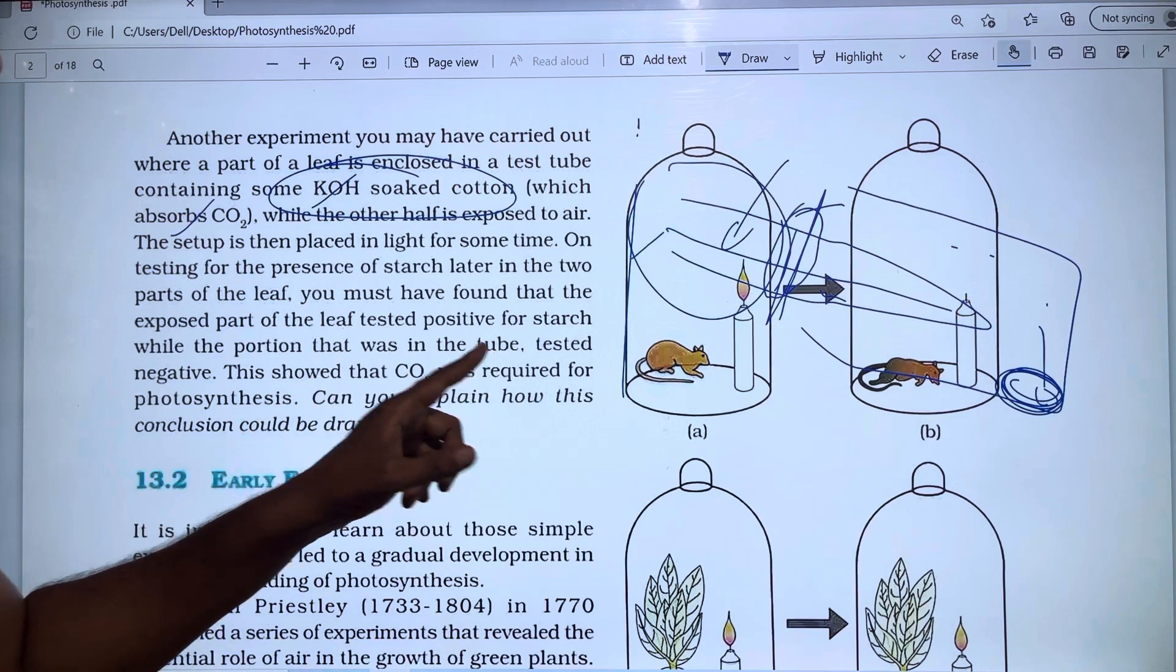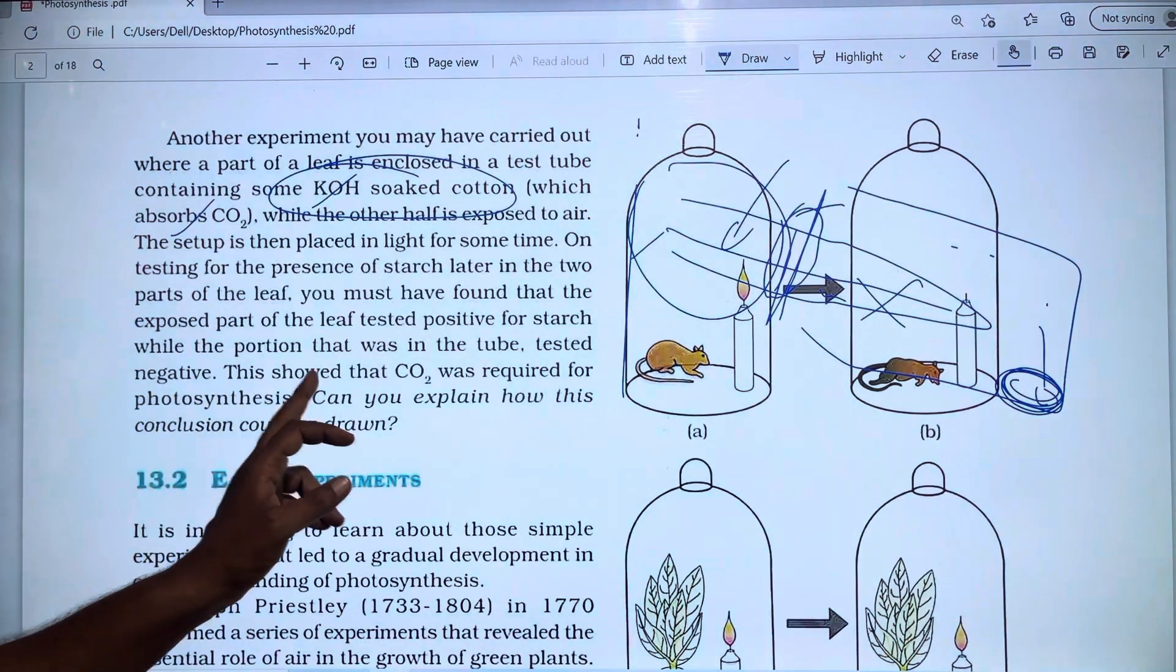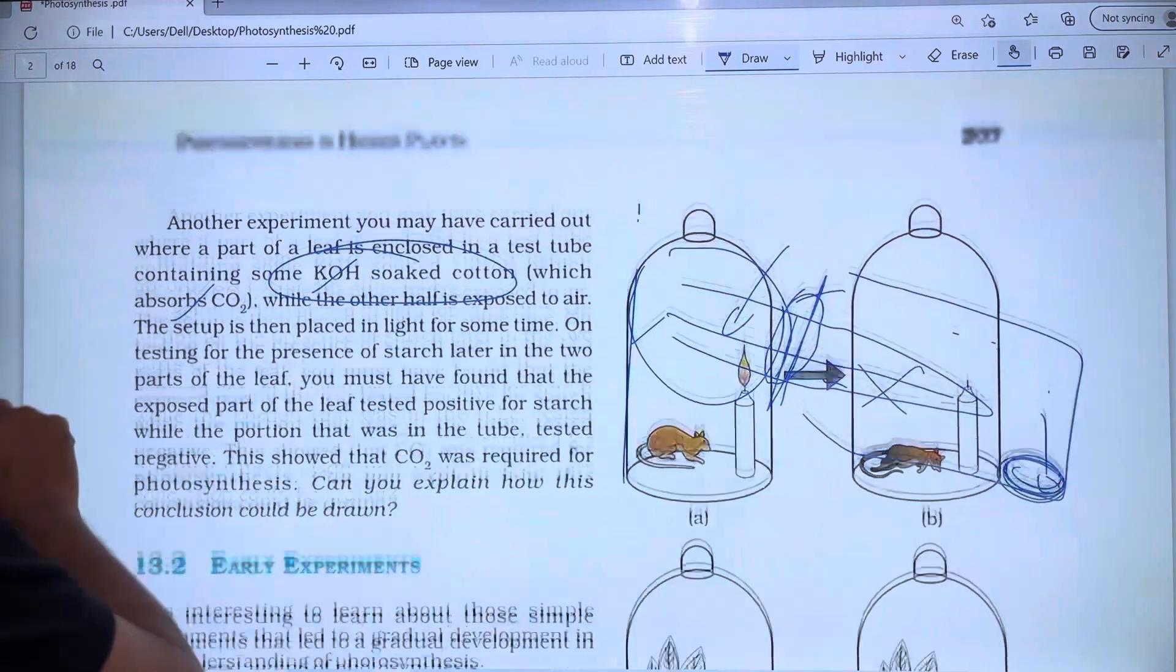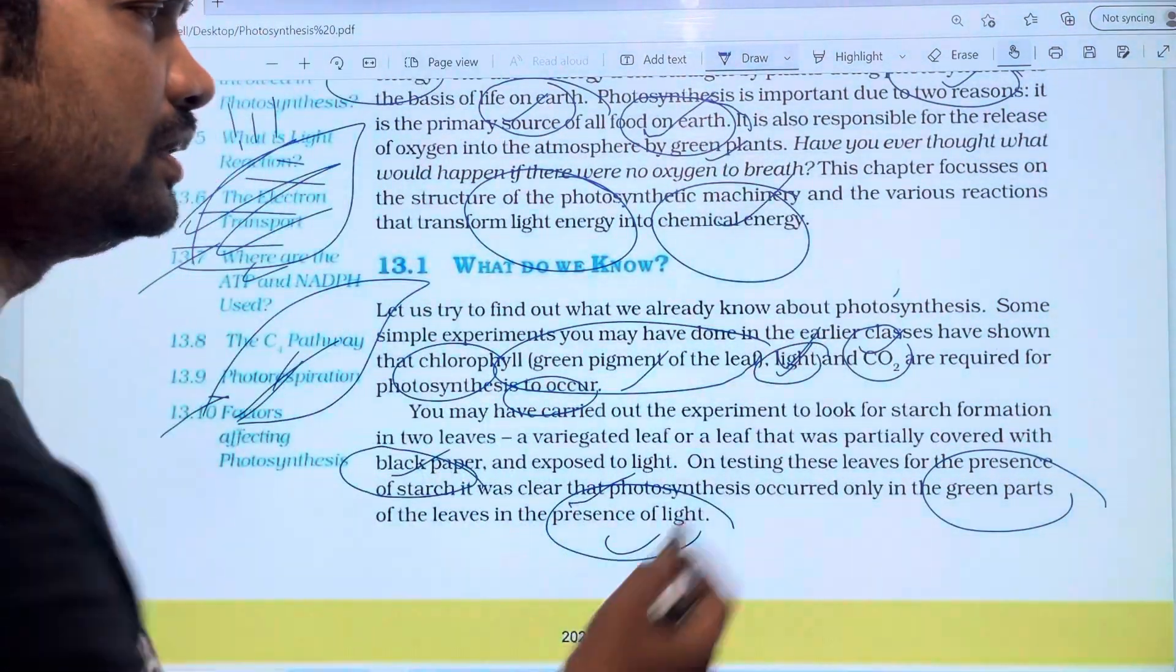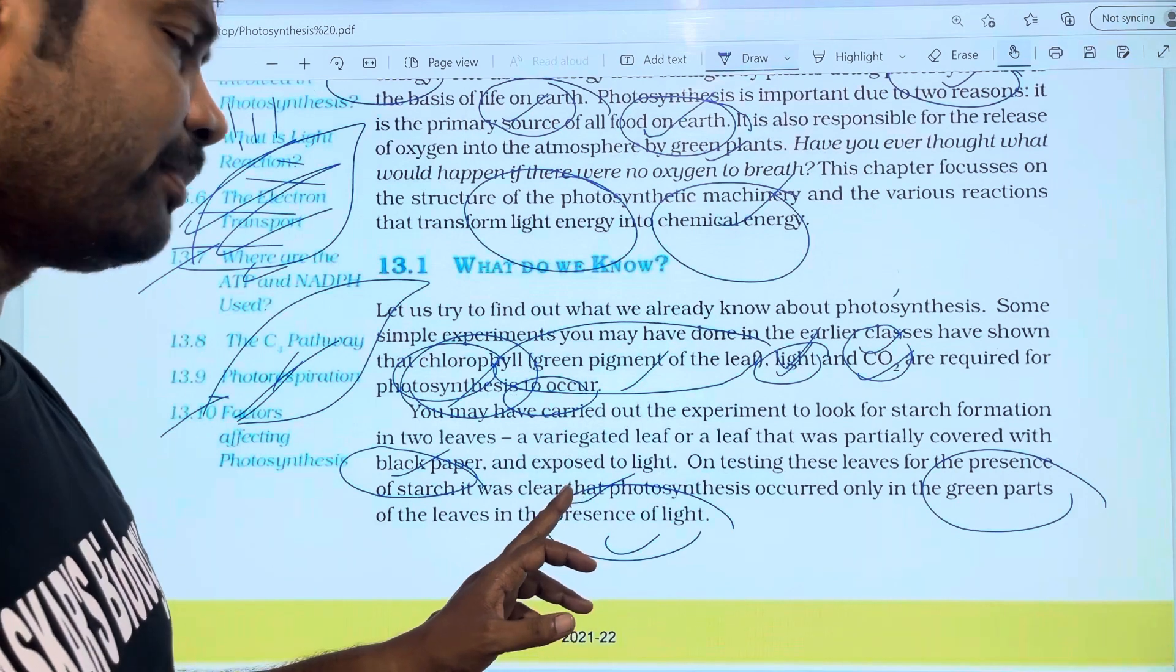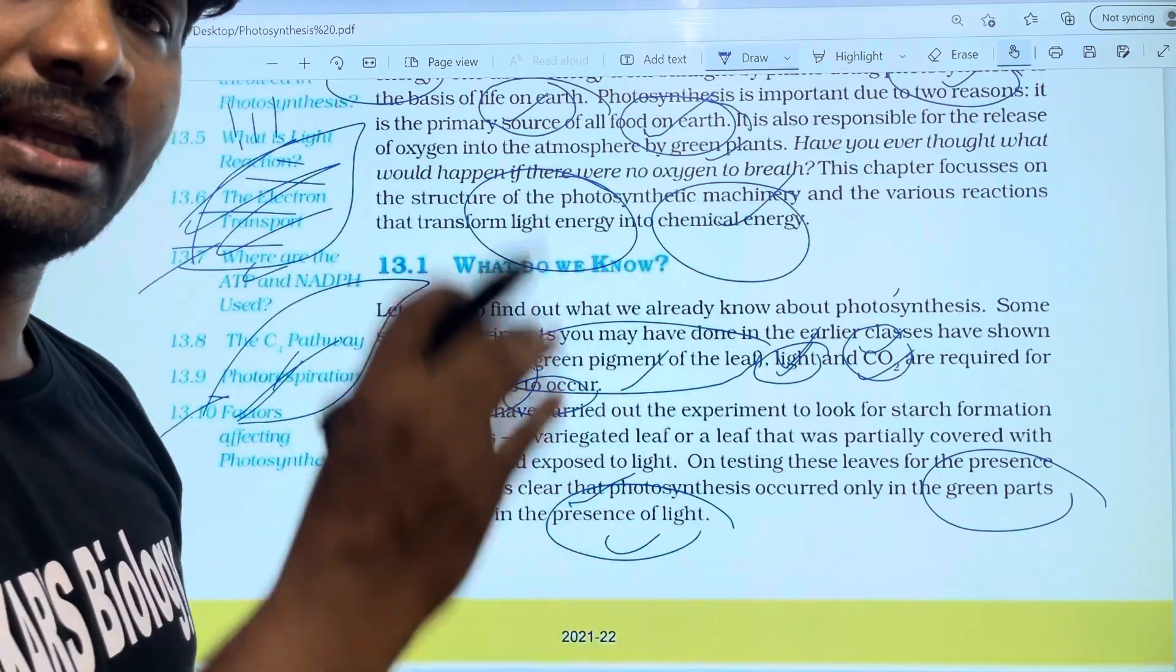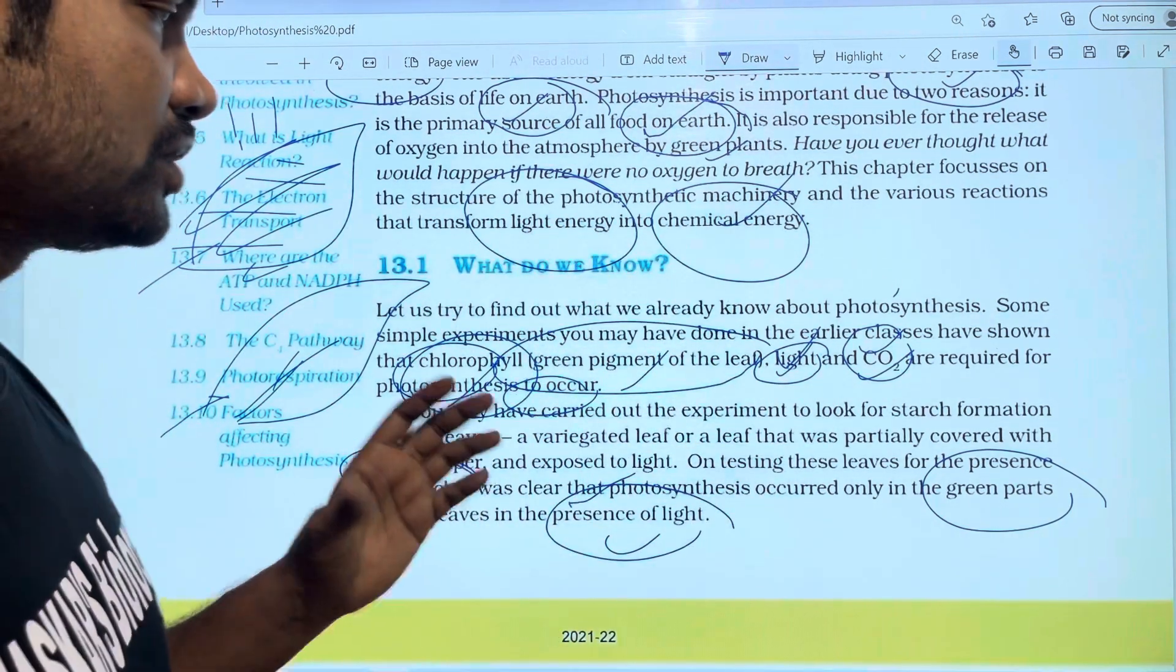The part that was in the tube tested negative. This showed that CO2 was required for photosynthesis. We have seen the light requirement, CO2 requirement, and chlorophyll. CO2 absorption by KOH soaked cotton demonstrates the CO2 requirement.